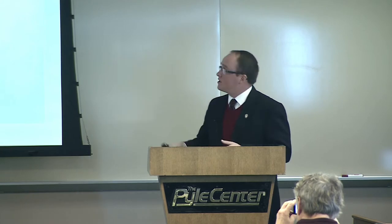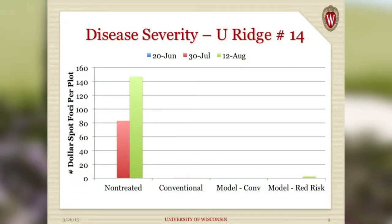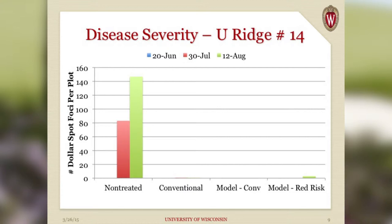If a product doesn't control disease, it's not going to be of any use to us. These are results from just one of three plots on the 14-hole fairways — the other two were comparable. We have our non-treated control, our conventional program, and then two programs using the model: one with conventional fungicides and one with only reduced risk fungicides. We have three rating dates: June 20th, July 30th, and August 12th. The non-treated control showed a fair amount of dollar spot — increasing significantly throughout the year. The conventional program was very effective, with barely visible bars.